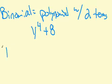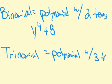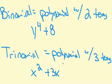The Y to the fourth is one term. The eight is another term. Two terms is a binomial, and then we have trinomials as a polynomial with three terms. An easy example there is X squared plus three X minus one. Remember, binomial, like a bicycle, has two wheels. Tricycles have three wheels. Two terms, three terms.